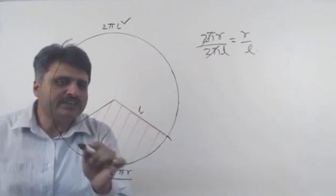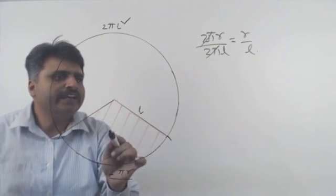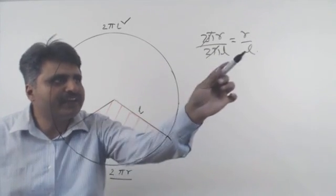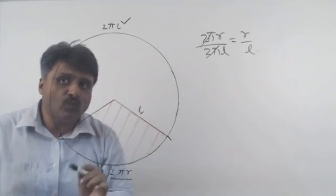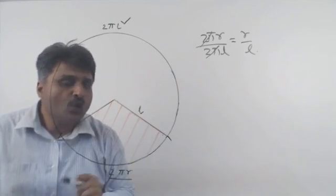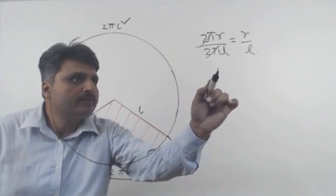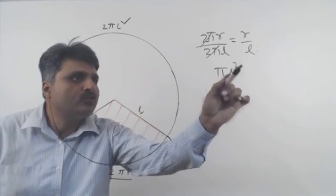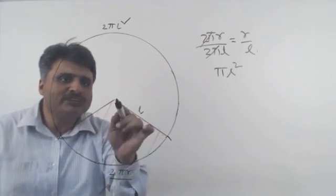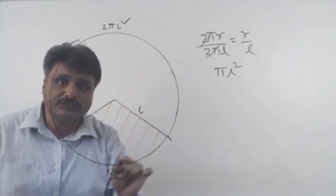Now this is the area that we need to find. It should be the same fraction of the overall area. And what is the overall area? Overall area is pi L squared. Right, because L is the radius of this larger circle.